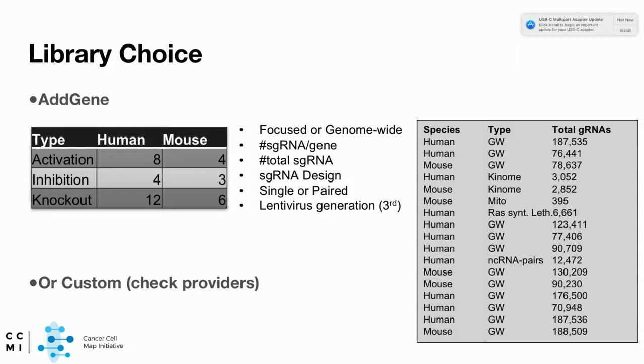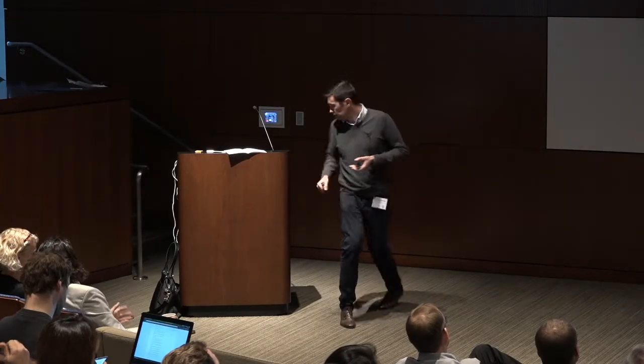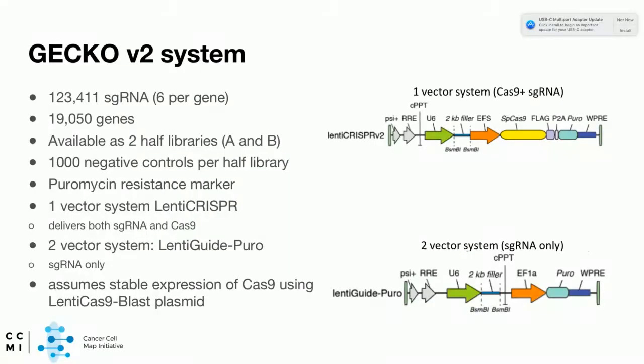Here is a detail of some of the knockout libraries available. Most are genome-wide with large numbers of single guide RNAs. The one we focus on today — one of the very first used at large scale — is the GeCKO version 2 system. It covers the entire human genome of ~19,000 genes through 123,000 single guide RNAs, separated into libraries A and B, with three single guide RNAs per gene in each. There are negative controls, a puromycin resistance selection marker, and two strategies: a one-vector system expressing both Cas9 and the guide RNA, versus a two-vector system where Cas9 is expressed prior to the experiment and the virus only delivers the single guide RNA.